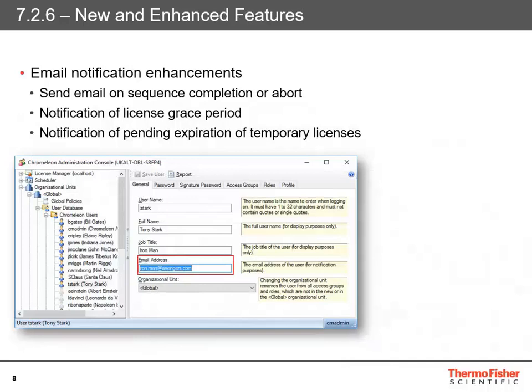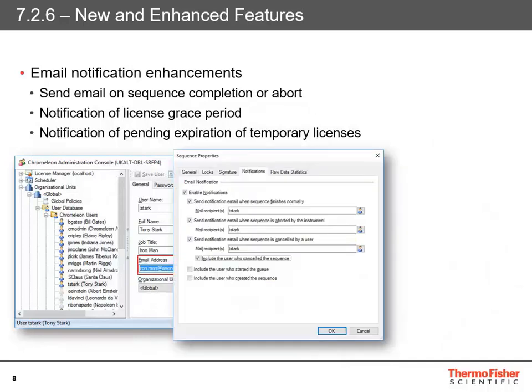Another big and really nice enhancement added is email notifications. With 7.2.6, you can now get email notifications when a sequence finishes, is aborted, or is cancelled. Each user now needs an email address added in user management. In the sequence settings you can set up when to send a notification and who to send it to. You can also include the user who started the sequence in case it's aborted by someone else — even if the user who created the sequence is not the same person who starts it.